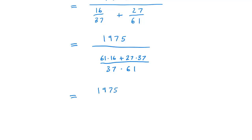That's really nice for our problem because then we have a 1975 on the top and the bottom. Now at the bottom, we still have a divide by 37 times 61.